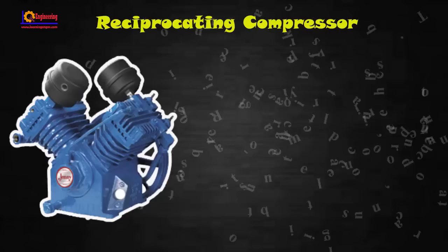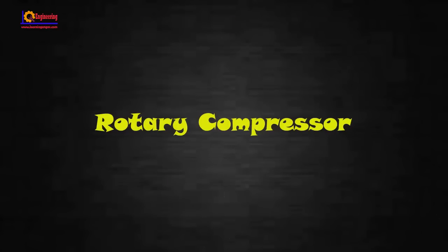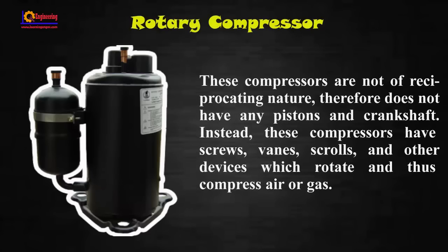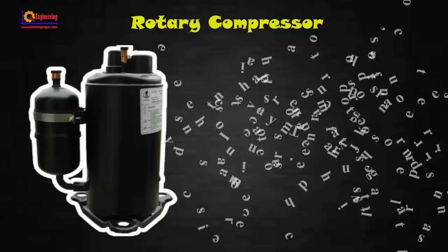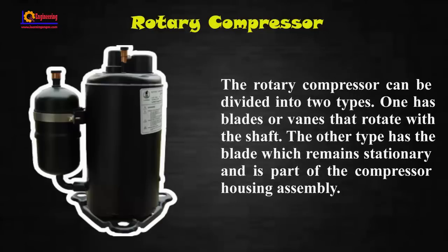Rotary compressors are not of reciprocating nature and therefore do not have any piston or crankshaft. Instead, these compressors have screws, vanes, scrolls, and other devices which rotate to compress air or gas. The rotary compressor can be divided into two types: one has blades or vanes that rotate with the shaft; the other type has blades which remain stationary and are part of the compressor housing assembly.